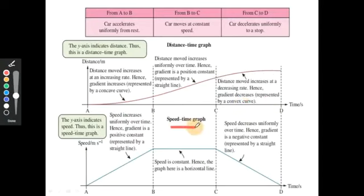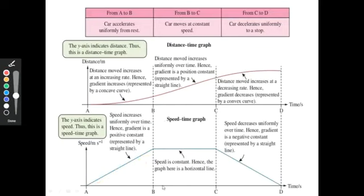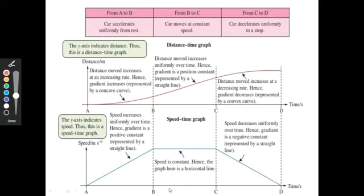In the speed-time graph: from A to B the car accelerates uniformly from rest, so speed increases uniformly over time — gradient is a positive constant, represented by a straight line. From B to C the car moves at constant speed — the graph is a horizontal line. From C to D the car decelerates uniformly to a stop — speed decreases uniformly, gradient is a negative constant, represented by a straight line.